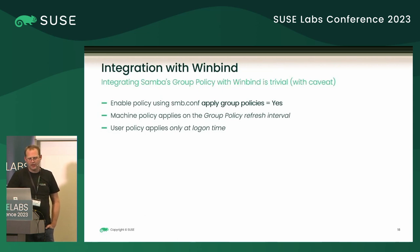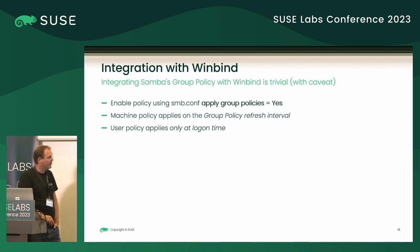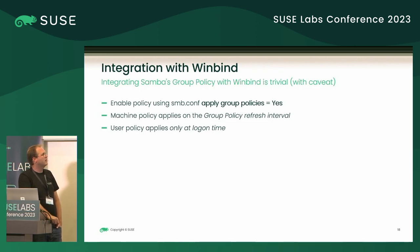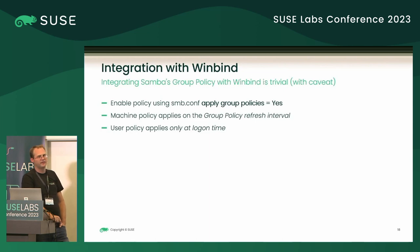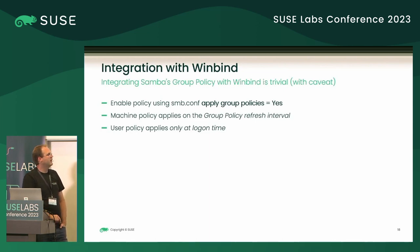For integration: it works with WinBind. When you're enabling group policy for WinBind, you just set an smb.conf option. It applies machine policies on a specific refresh interval as defined in Microsoft documentation. User policy on the other hand only applies at logon time — that's a bug I'm working on.